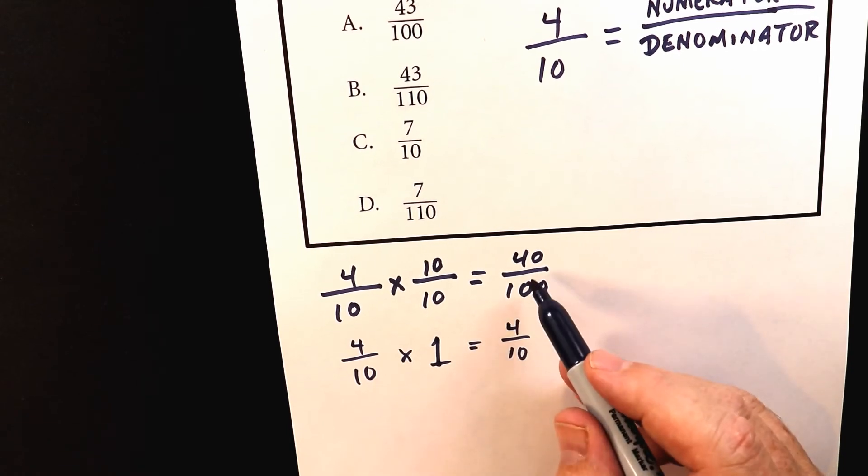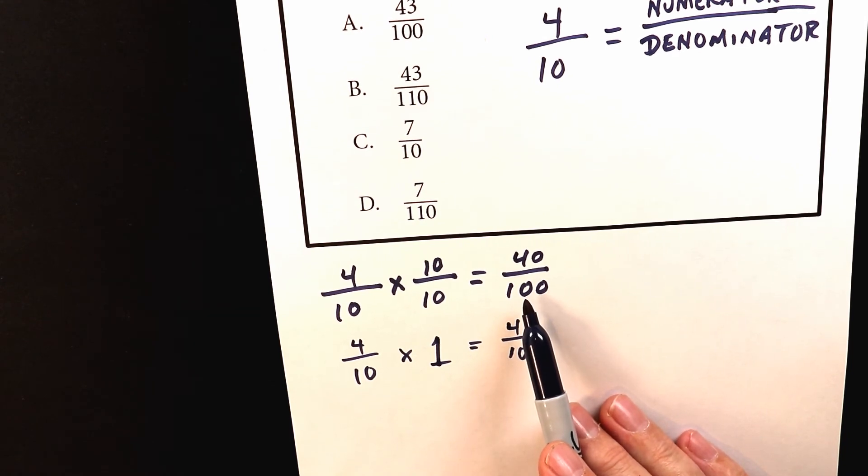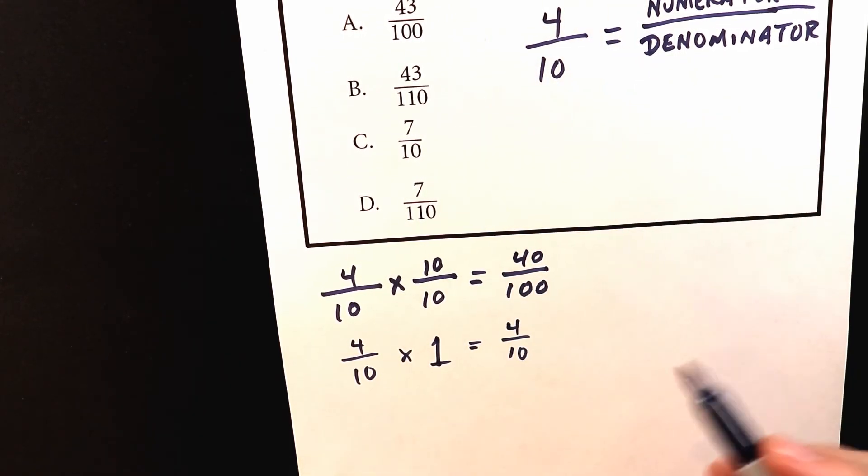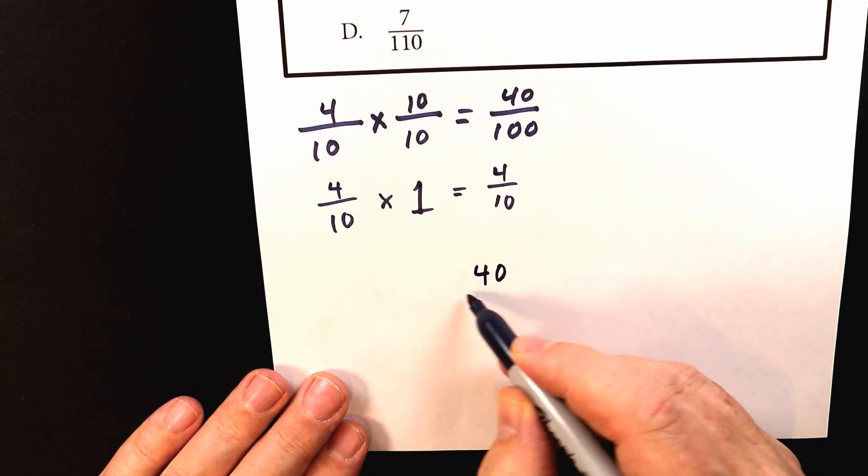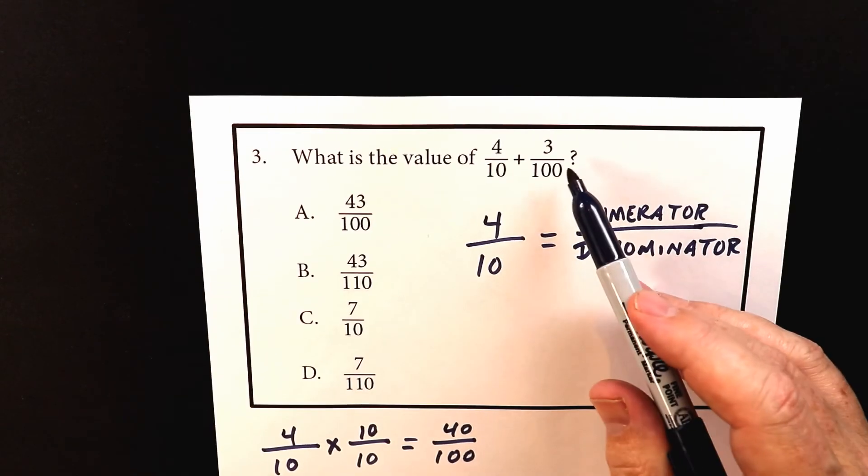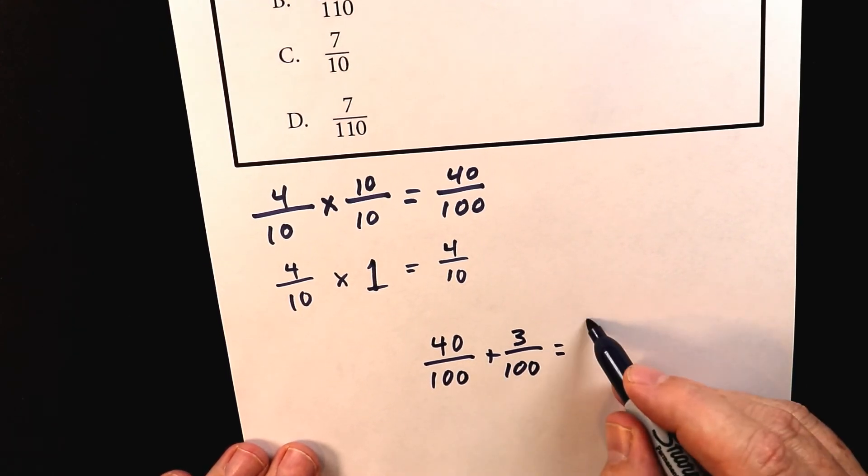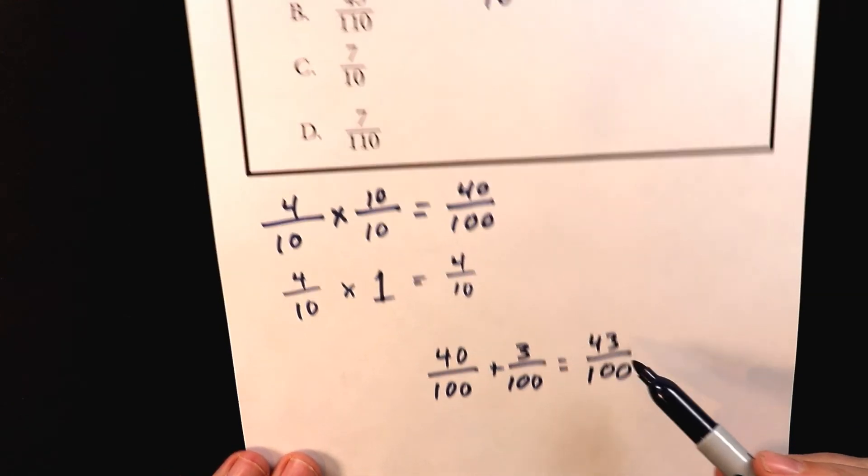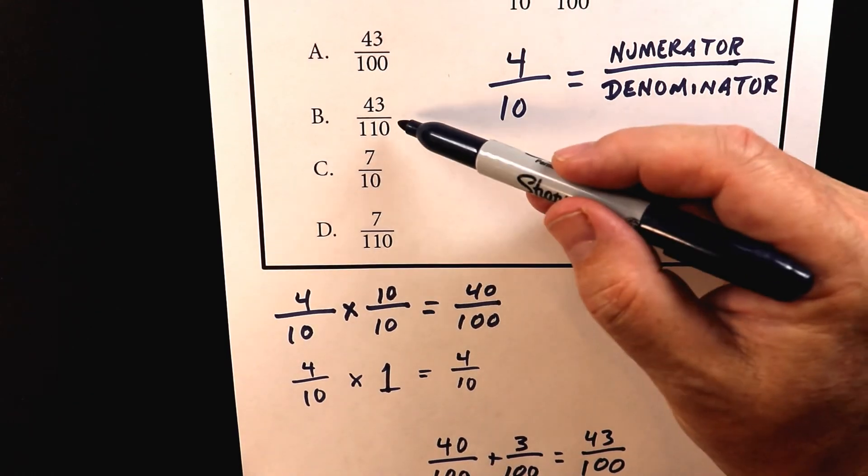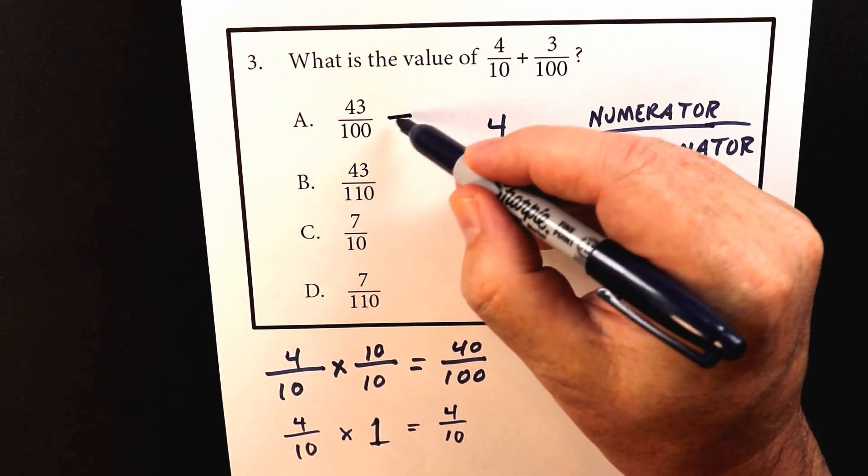Okay so now that we've established that 4 over 10 is the same as 40 over a 100. Now we can bring this one down. So what I want to do is I want to take this one and I'm going to take that 40 over a 100 and I'm going to add it to 3 over a 100. And 40 plus 3 equals 43 over a 100. So I look here and then I look up here and I say oh not that one that's 110 but that one works. So here is your final answer.